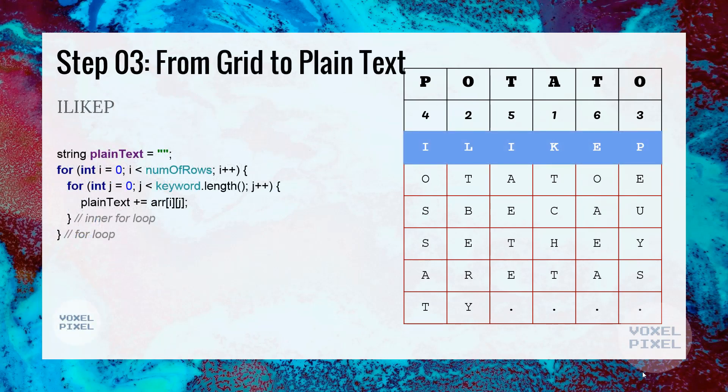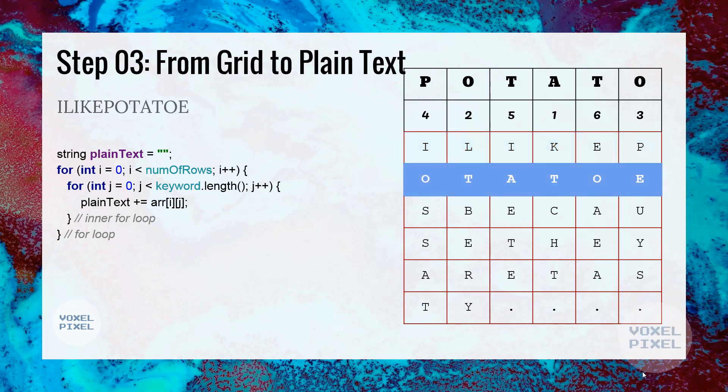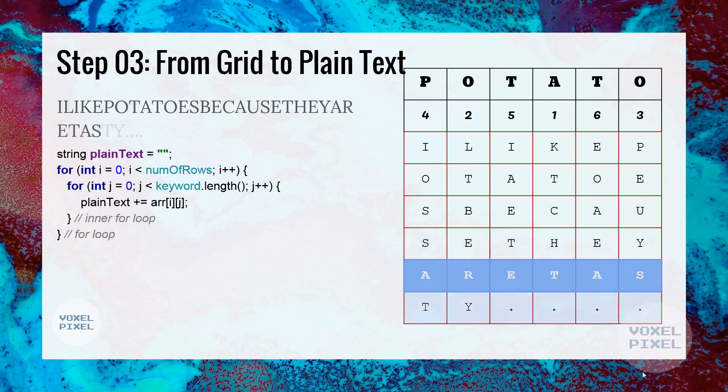Next, we will extract the plain text from the grid. To do that, we will extract each row one by one. First, we extract the first row, then second, then third, then fourth, and fifth, then last sixth row.